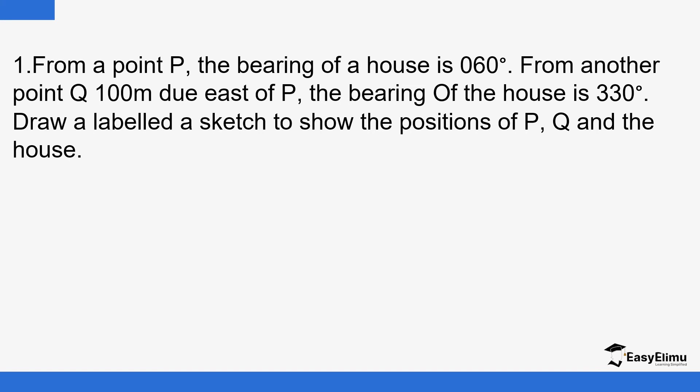So we have an example here. From a point P, the bearing of a house is 60 degrees. So let me do a sketch of that. You write P, and then you measure 60 degrees from the North Pole. Remember here, the measurement must start from the North Pole. Then you have the point, so you draw that vertical line, and then you draw a horizontal line. So this is the house.